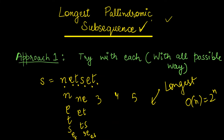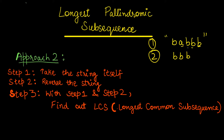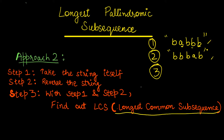To improve this complexity, we look at the second approach. First, take the string itself — let's say 'babb'. Then take the reverse of it: last letter, second last, third last, and so on. Keeping these two strings, we calculate the longest common subsequence of these two strings. I've already explained LCS with recursion as well as dynamic programming and will give the link in the description.